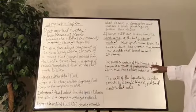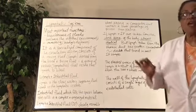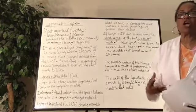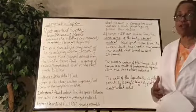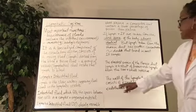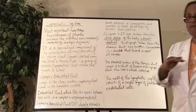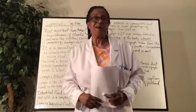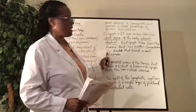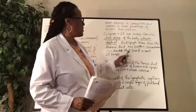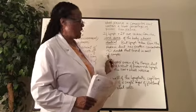The elevated protein in the thoracic duct lymph is a result of protein-rich lymph from the liver and the small intestines. The liver and small intestines drain their lymph into the thoracic duct, causing it to have more protein. This makes that thoracic duct lymph look totally different from interstitial fluid in that general area. The wall of the lymphatic capillary consists of a single layer of flattened endothelial cells, just like the inner lining of blood vessels.